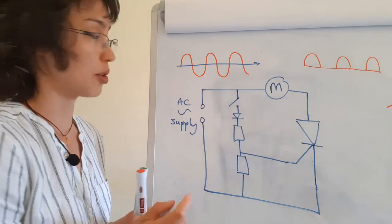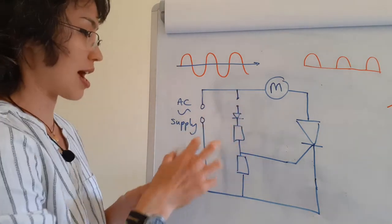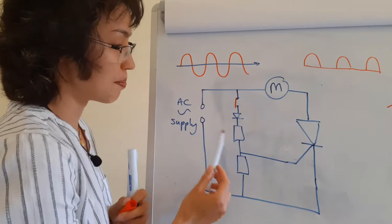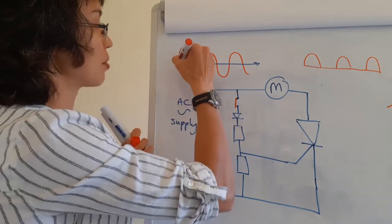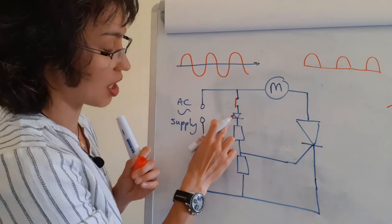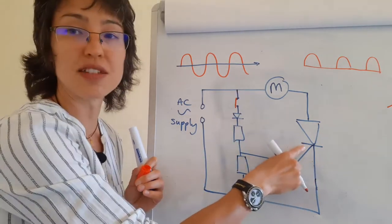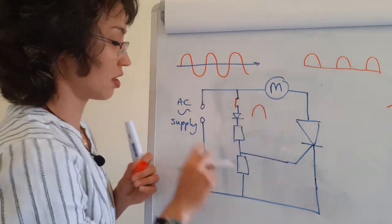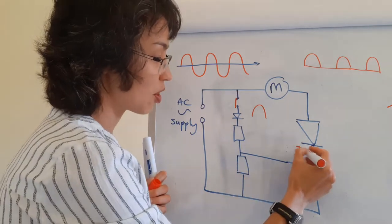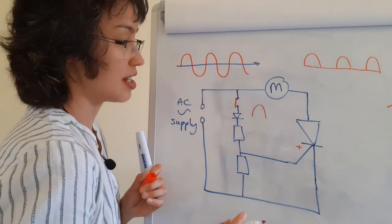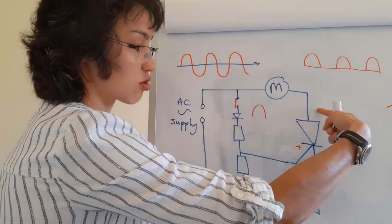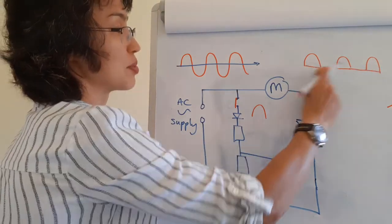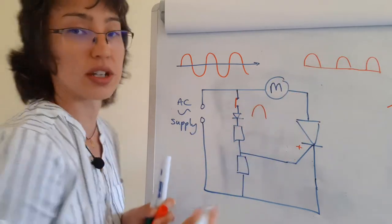When I close the switch, I close my switch here, and that means when I'm in the positive cycle — the reason I've put a diode here is because I don't want to put a negative bias on my gate, because I don't want to damage my device. So essentially, when I have the positive cycle of my AC supply, I'm going to get a positive potential on the gate, and I'm also going to get my potential across the device. So they both switch on at the same time.